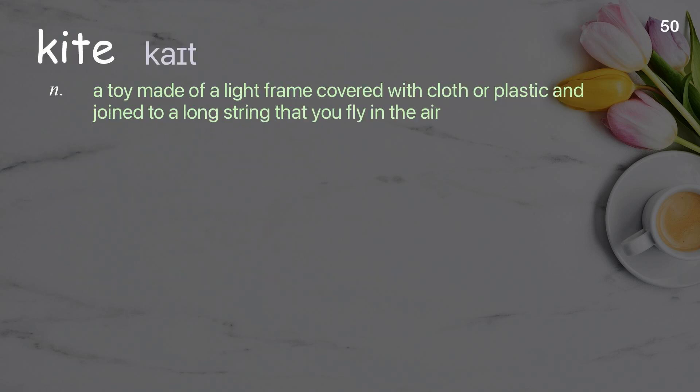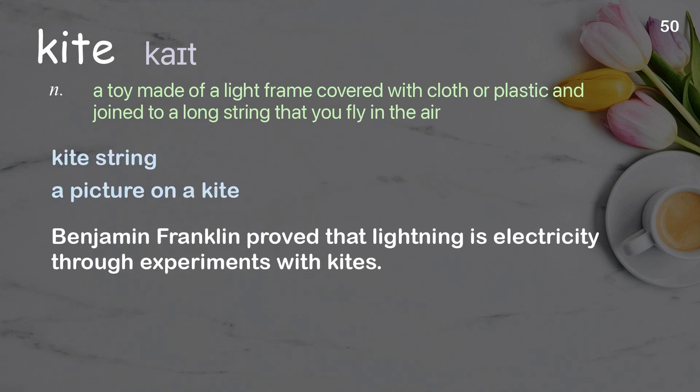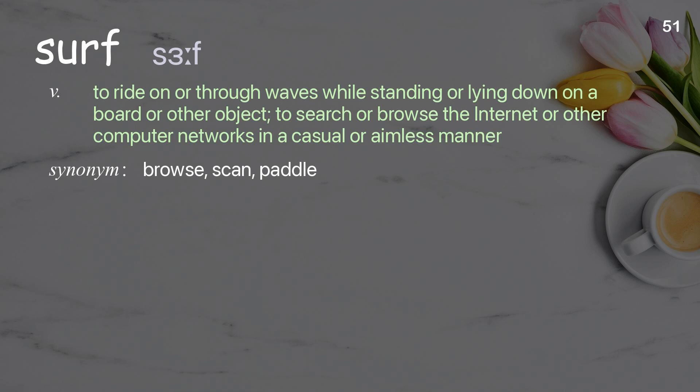Kite: A toy made of a light frame covered with cloth or plastic and joined to a long string that you fly in the air. Examples: Kite string. A picture on a kite.